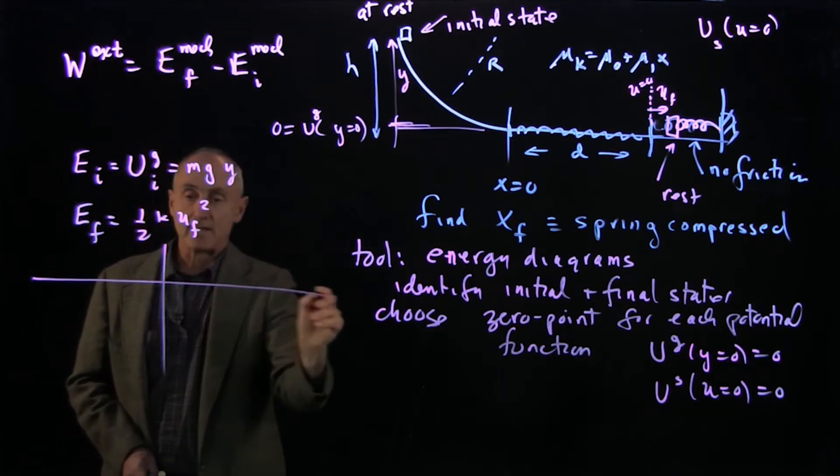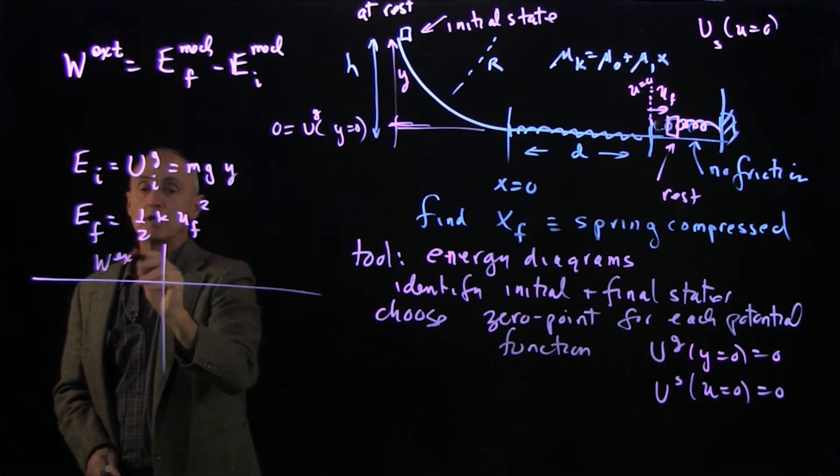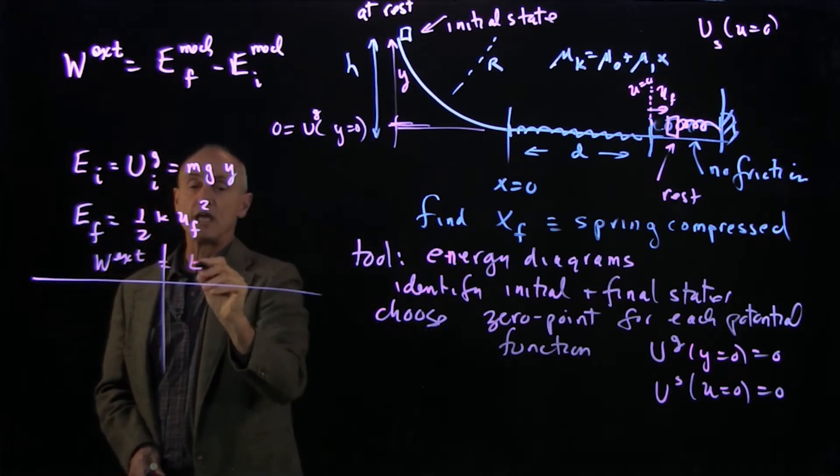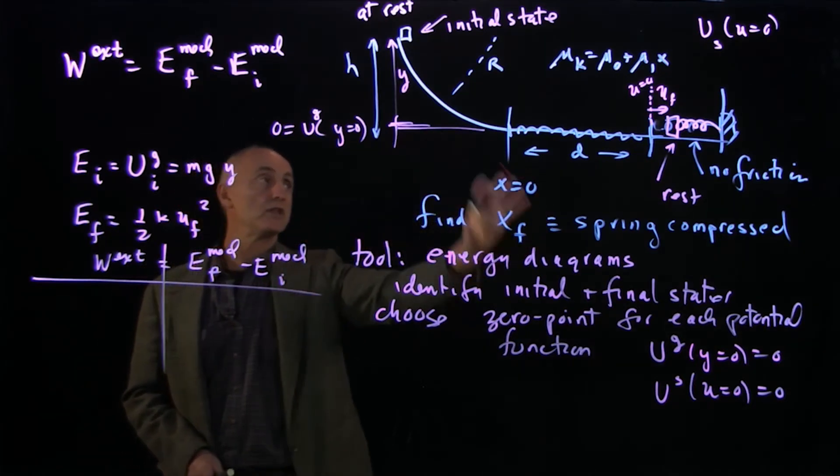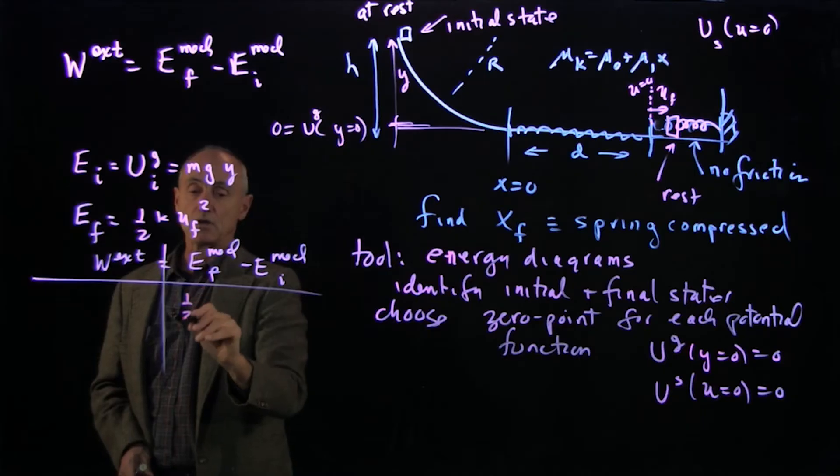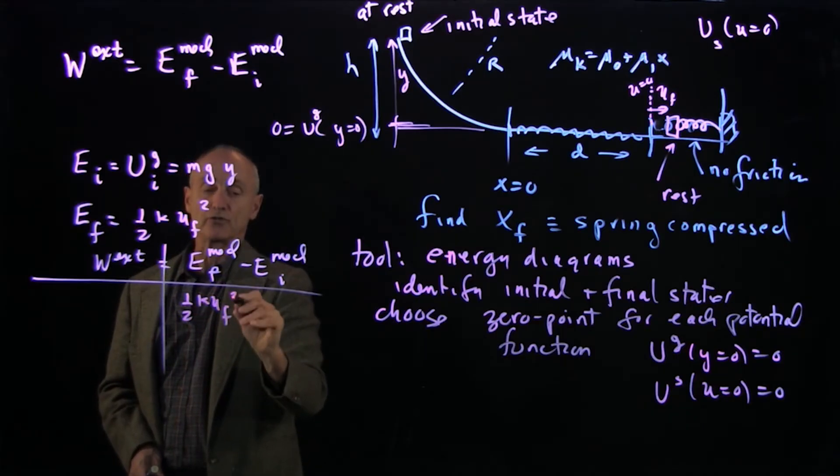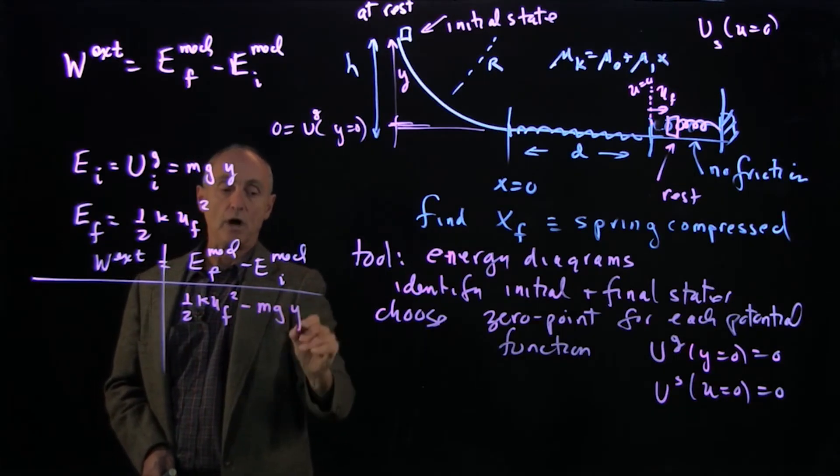Now, in terms of our external work equals the change in mechanical energy, we have now identified the right-hand side using these tools of the energy diagrams. And I can write my description u final squared minus mgy.